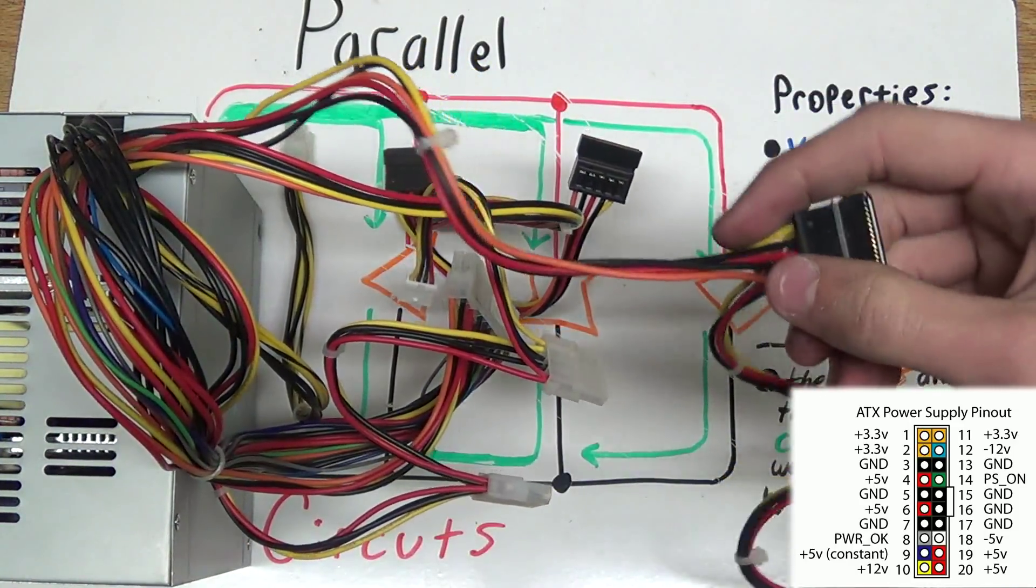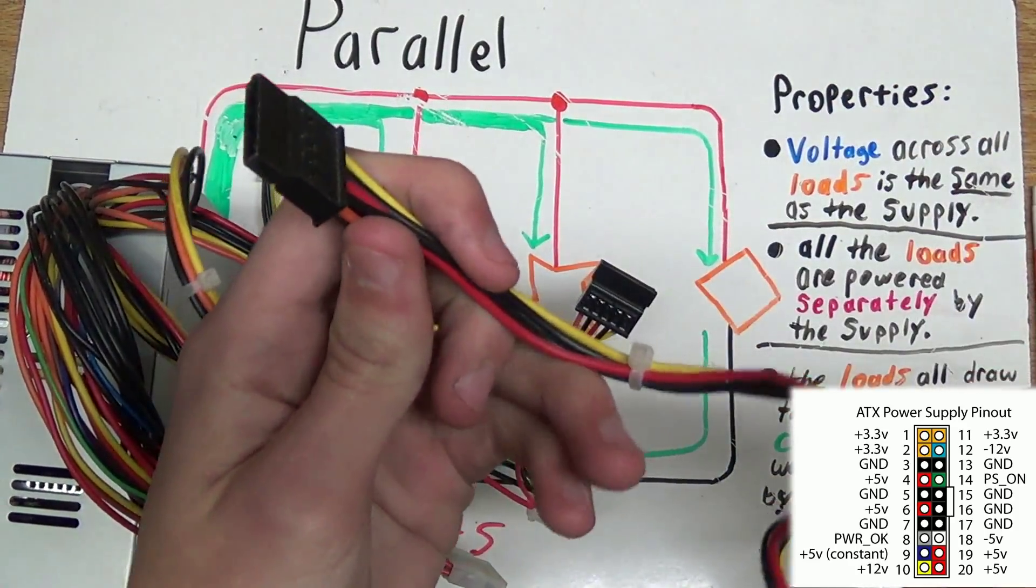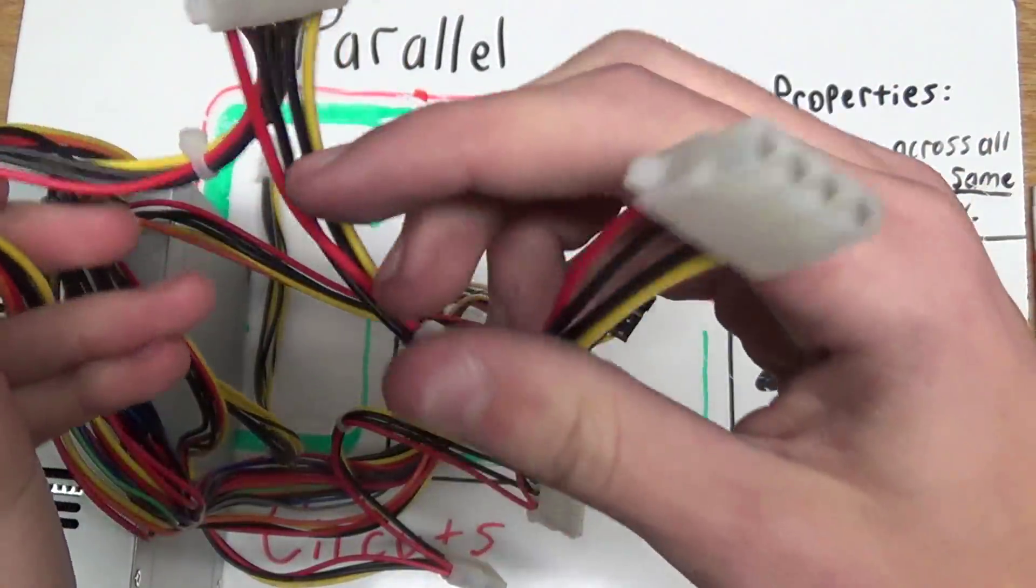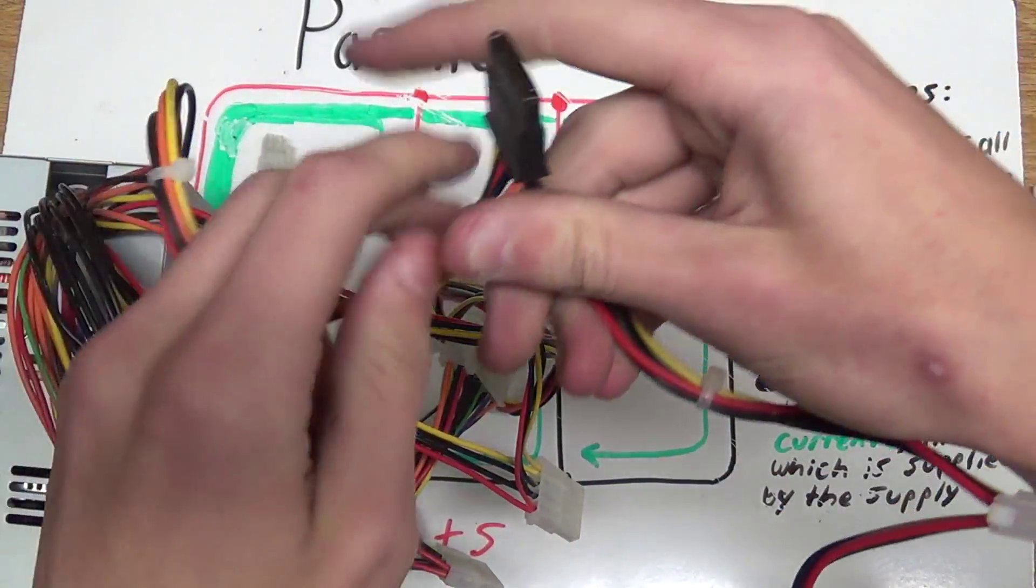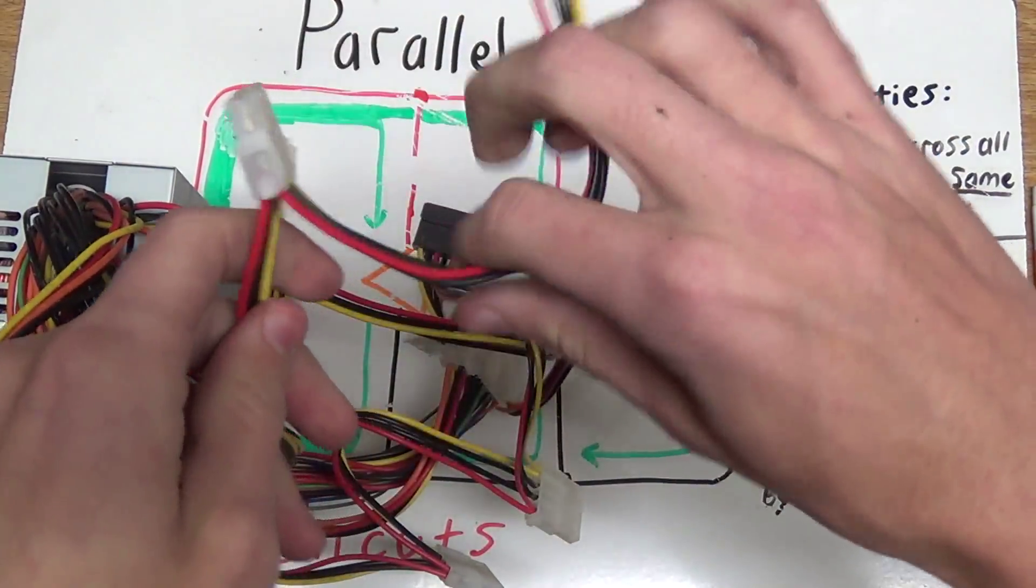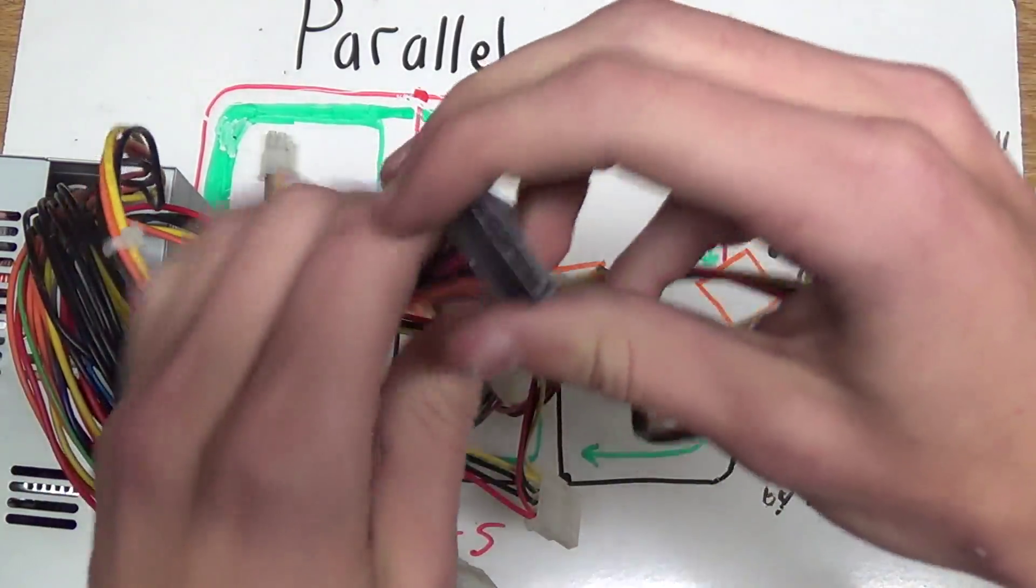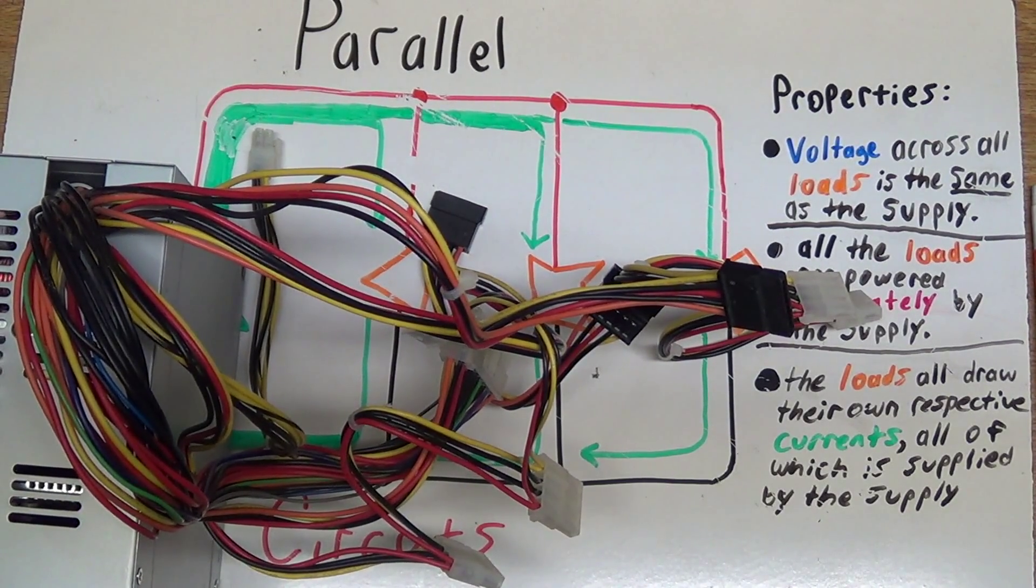And here's another place where you'll see series circuits a lot. See this cable right here? It goes off to one connector that goes to something inside your computer, a hard drive in this case, and two other molex connectors. And you can actually see how they're all daisy chained together with a parallel circuit. And all the voltages across all these connectors will be the same, all powered by one single power supply that's inside of this large unit.